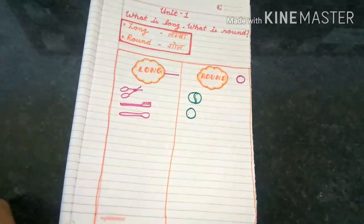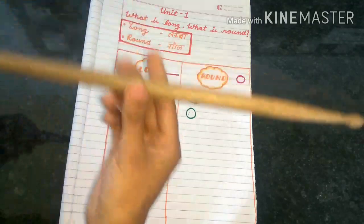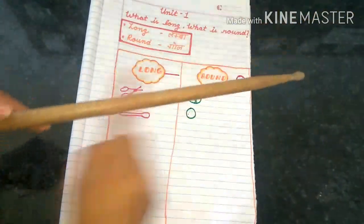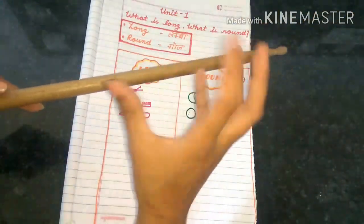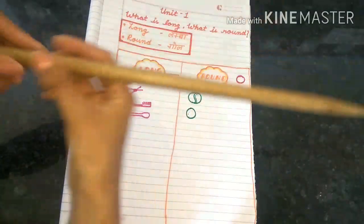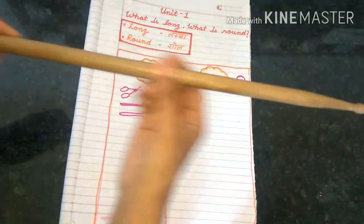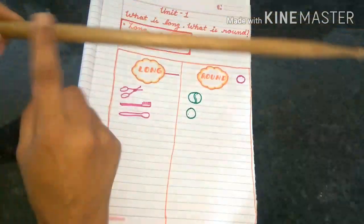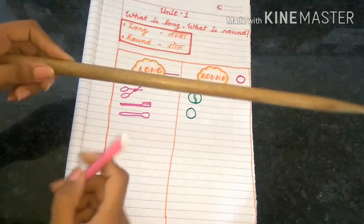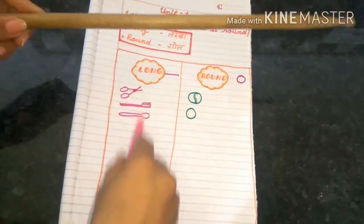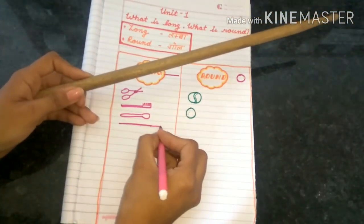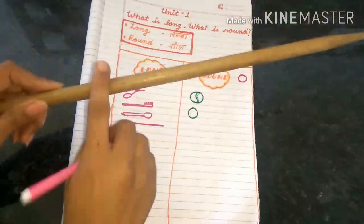So the next thing I have is this. This is a stick. So how is it looking? Is it looking like this or like this? Yes, this is long. So we are going to draw it on the long side. This is our stick.